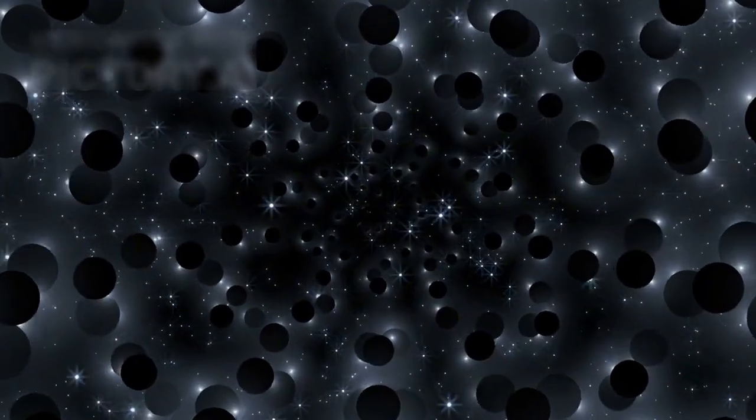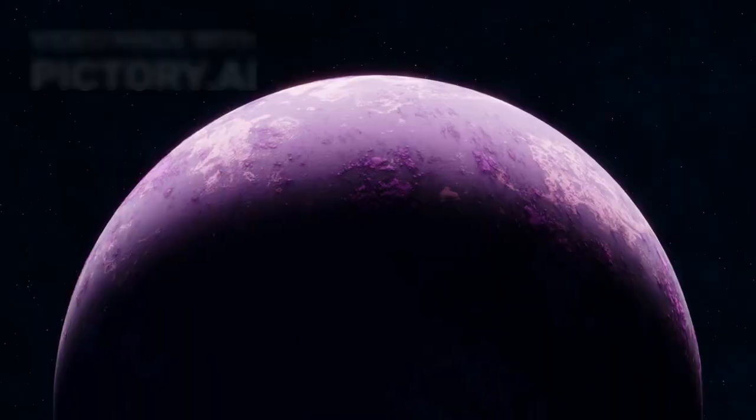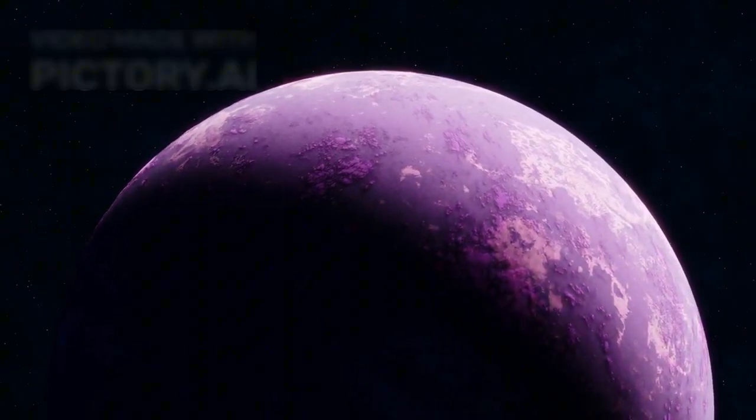But Proxima b is tidally locked, meaning one side always faces the light of the star while the other is stuck in eternal darkness. The bright side scorches under constant light, while the night side stays trapped in cold shadows, deep and unyielding.